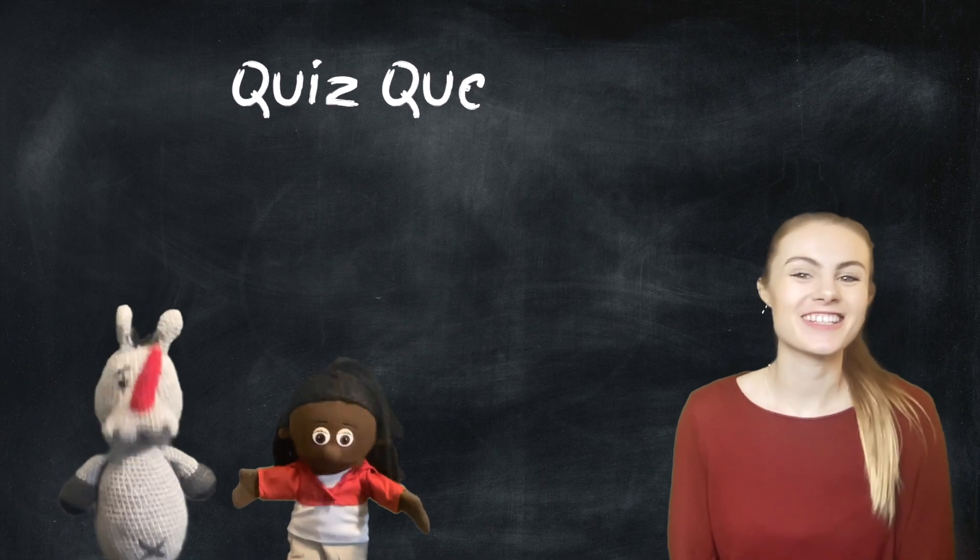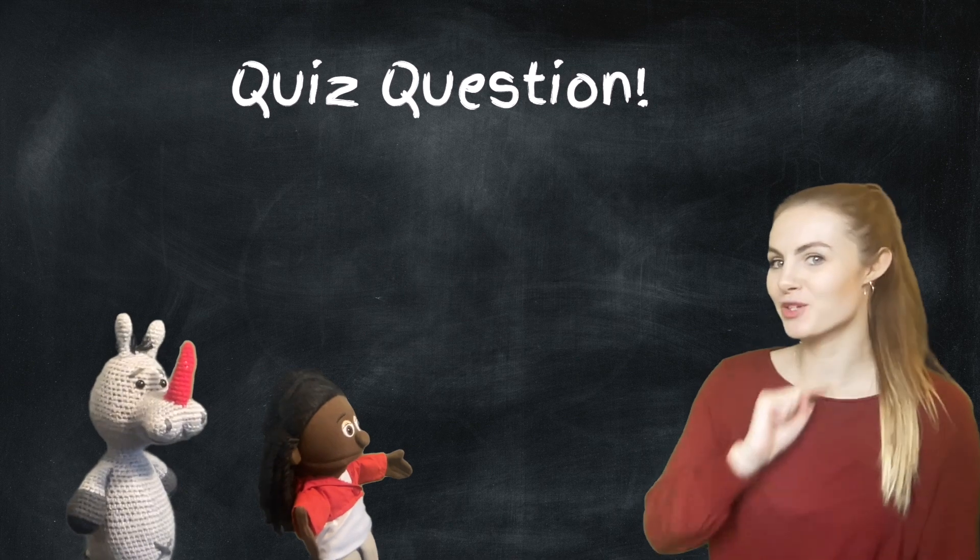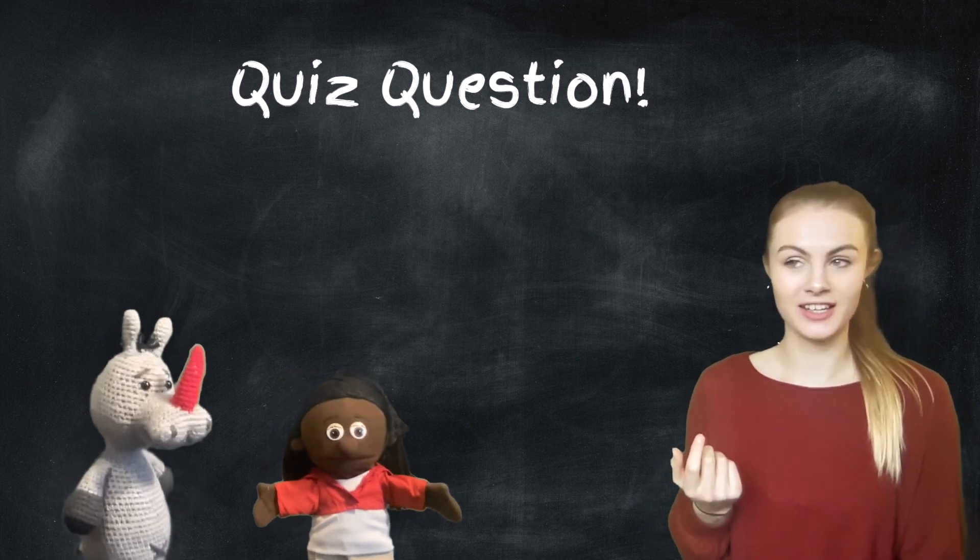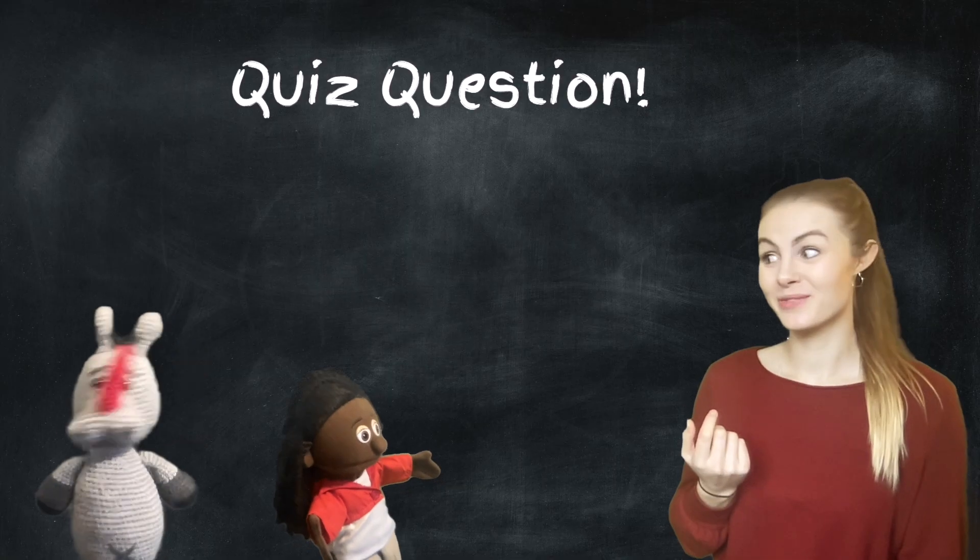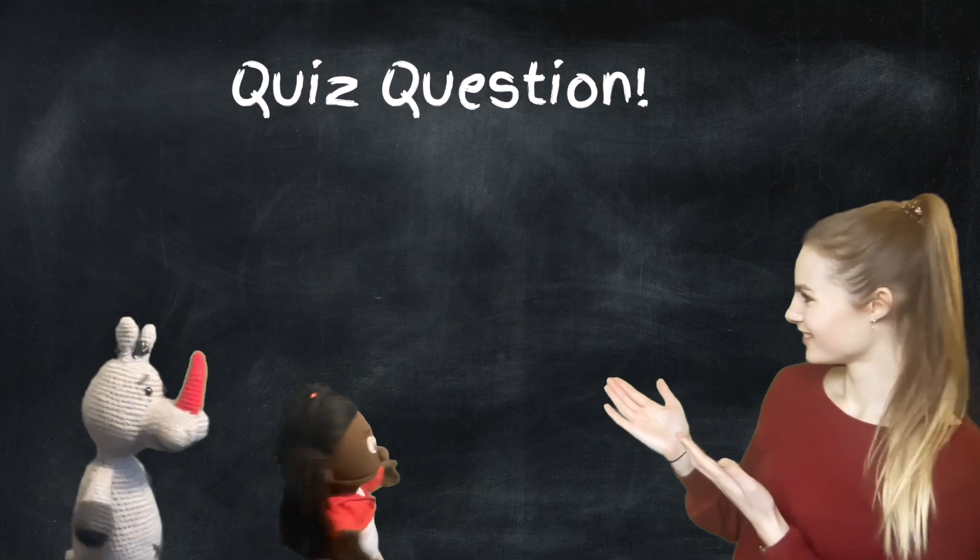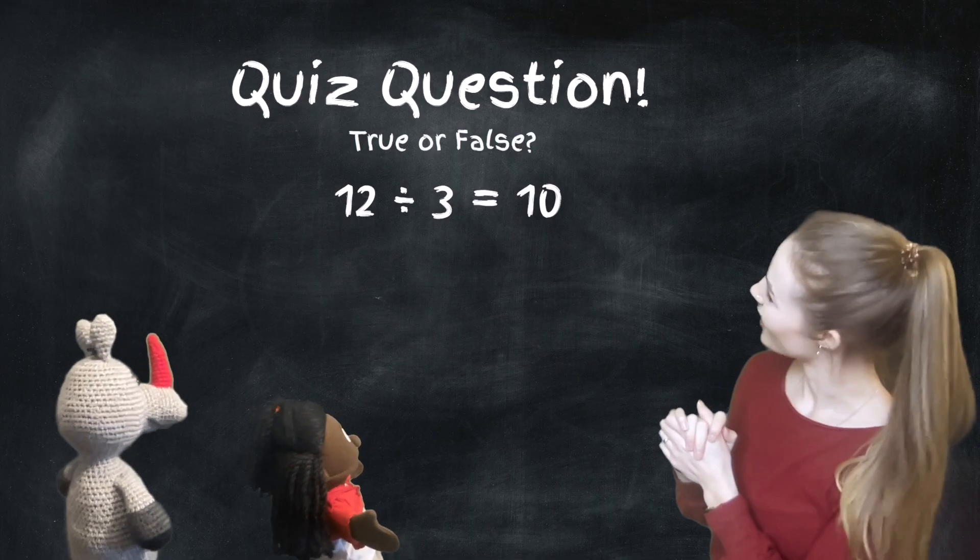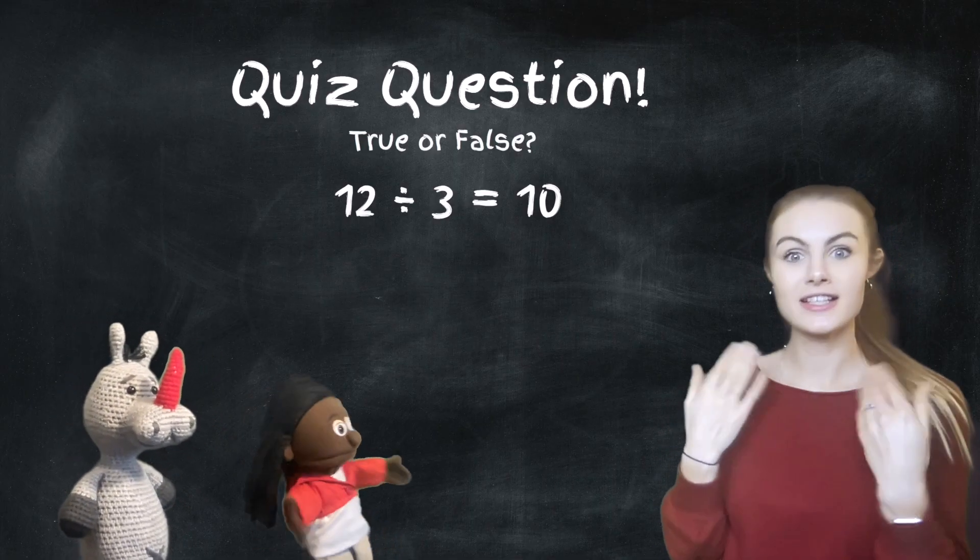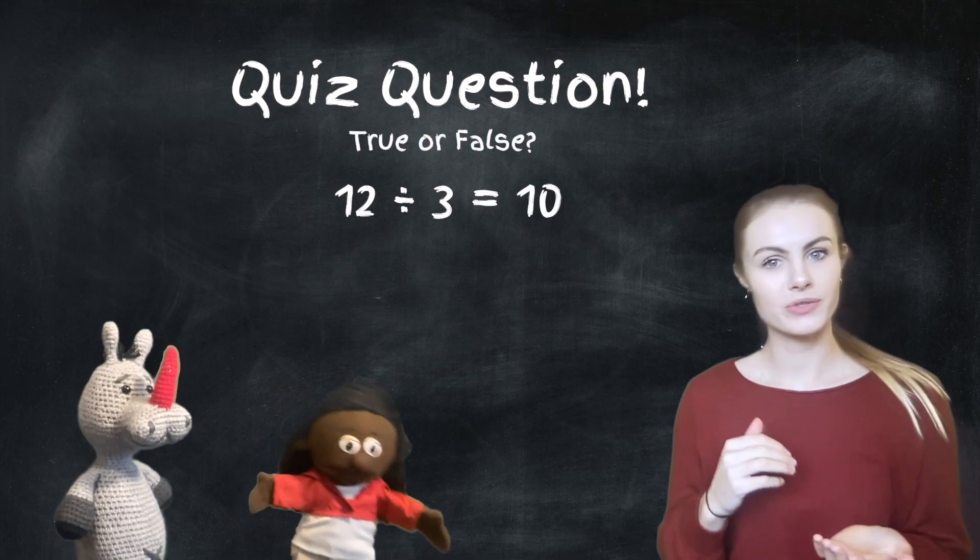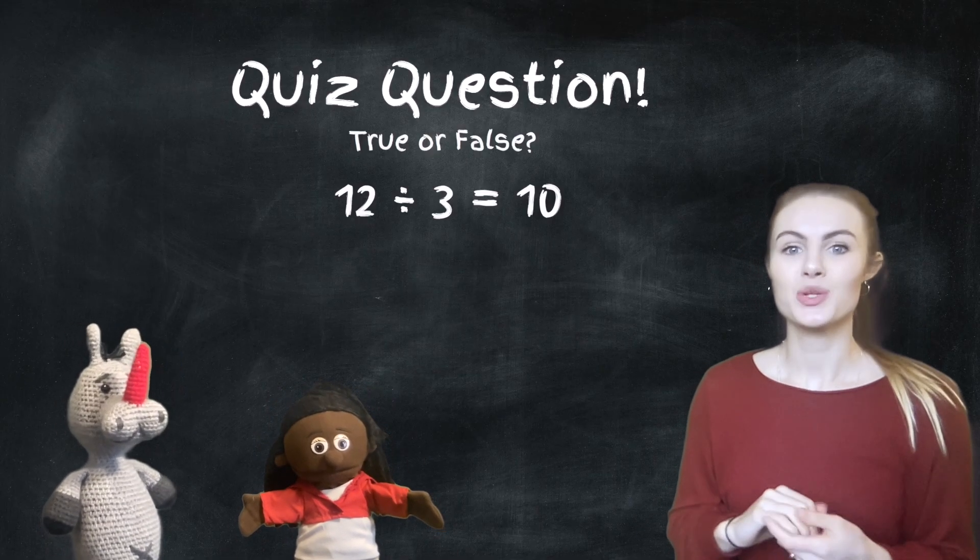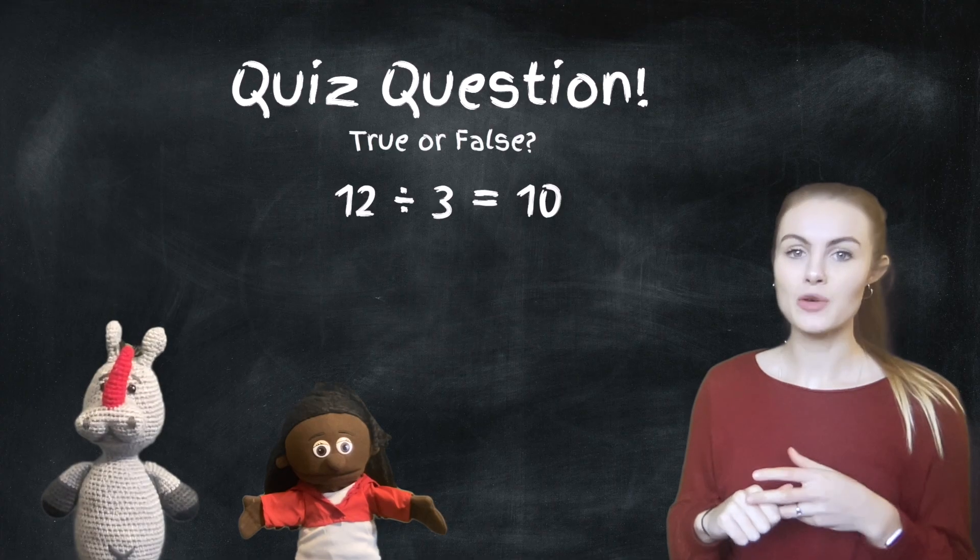And it's quiz question time. And as it's Roo's first day, Pig and I thought it would be really nice if she designed the quiz question today. Didn't we, Pig? We did, Pig. We did. Anyway, take it away, Roo. Ooh, I like this one. Roo says, is this statement true or false? So do you agree with it or do you disagree with it? It reads 12 divided by 3 equals 10. And there's a handy drawing for you there as well.